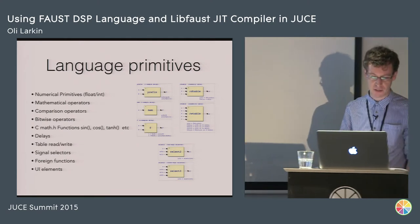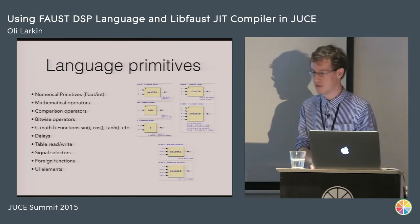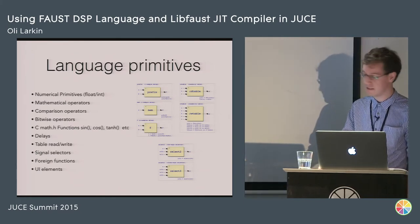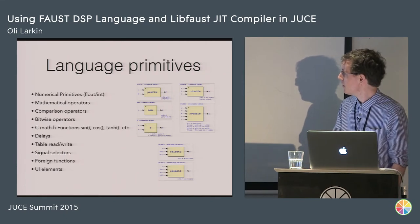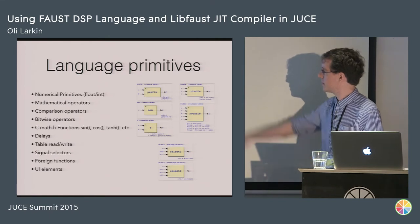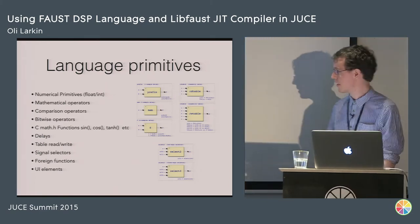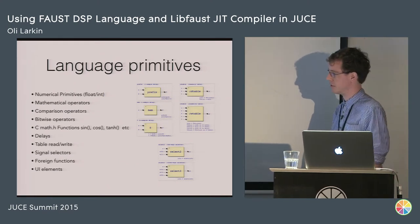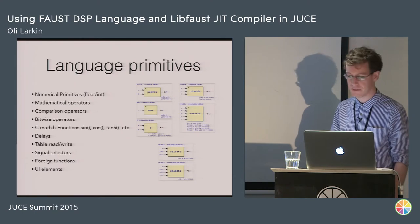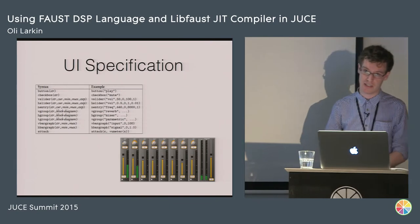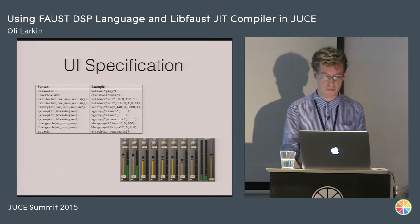As well as these operators, you've got lots of primitives in the language — built-in code that you can use. There are numerical primitives, which can be floats or ints, and you can choose whether your floats are single or double precision. There are mathematical operators, comparison operators — all the things you might be used to in a programming language. You've also got specific operators for dealing with delays, and some for selecting certain signals. You can also do foreign functions — you can include a C or C++ header file or source code file.